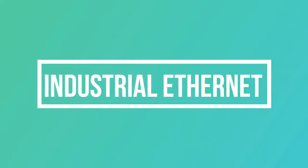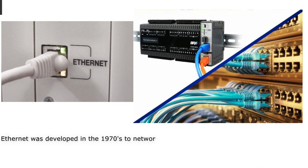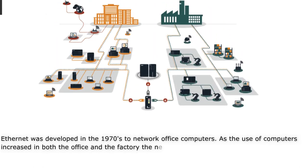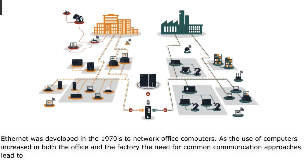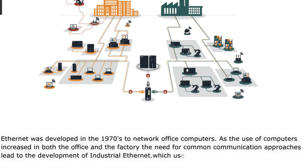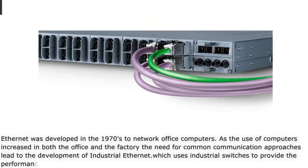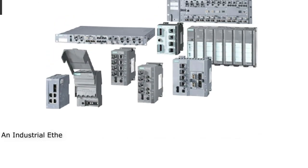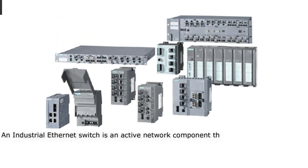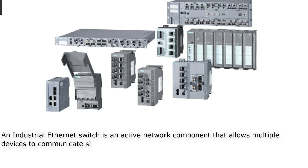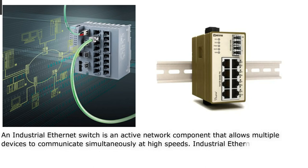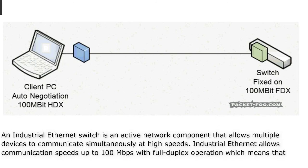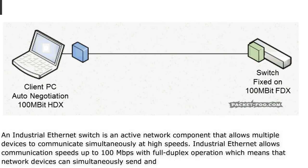Ethernet was developed in the 1970s to network office computers. As the use of computers increased in both the office and the factory, the need for common communication approaches led to the development of Industrial Ethernet, which uses industrial switches to provide the performance and reliability needed for high-speed factory networks. An industrial Ethernet switch is an active network component that allows multiple devices to communicate simultaneously at high speeds, with speeds up to 100 Mbps and full duplex operation, meaning network devices can simultaneously send and receive data.